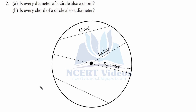We will check it. This is a circle with radius r and center O. The diameter is twice the radius. This is a chord joining two points on the circle. Is every diameter of a circle also a chord? Yes, this is true, because the diameter itself is the longest chord in the circle.